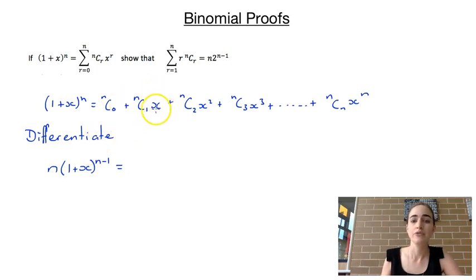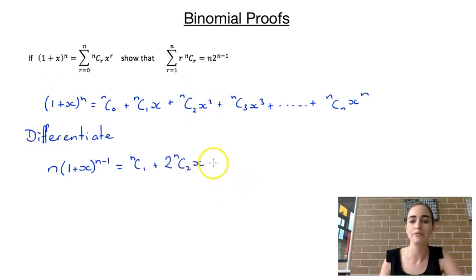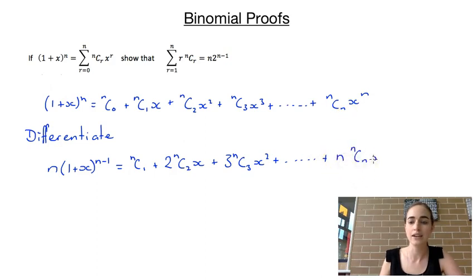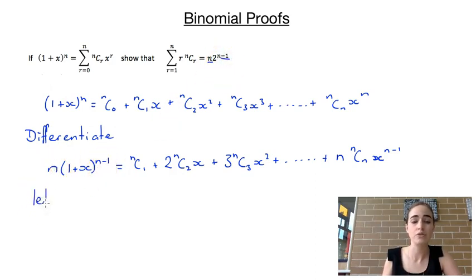Differentiating the right-hand side: the nC1·x term just gives nC1; differentiating nC2·x² gives 2·nC2·x; differentiating nC3·x³ gives 3·nC3·x², and this continues all the way up to the last term, which gives n·nCn·x^(n-1). Now we have n out the front on the left and a power of n minus 1 matching our target, so we let x equal 1.